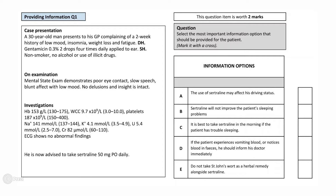His investigations show a normal haemoglobin, white cell count, and platelets. Urea and electrolytes are within the normal range as well. His ECG shows no abnormal findings. He is now advised to take sertraline 50mg orally daily for 6 weeks. The question asks you to select the most appropriate option that should be communicated to the patient.